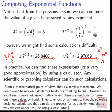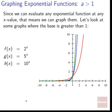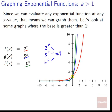If we can evaluate exponential functions at any point, we can plot as many points as we want and draw a smooth curve. Looking at graphs where the base is greater than 1: 2 to the x is in red, 5 to the x is in blue, and 10 to the x is in green. Notice all of these go through the point (0, 1) because 2 to the 0, 5 to the 0, and 10 to the 0 are all equal to 1 — that's a basic property of exponents: anything raised to the 0 equals 1.